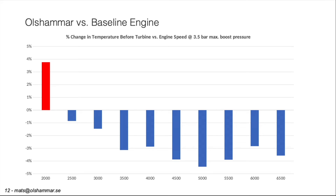Here is the temperature before the turbine at 3.5 bar boost pressure. For 2,000 RPM we have a higher temperature for the Olsammar engine. This is because the optimization gave us a smaller turbine orifice, so this turbine starts and spools up faster, and we have a lot more horsepower at 2,000 RPM for the Olsammar engine. For the later RPMs we have lower temperatures for all RPM, and we also have more horsepower for most of these RPMs as well.